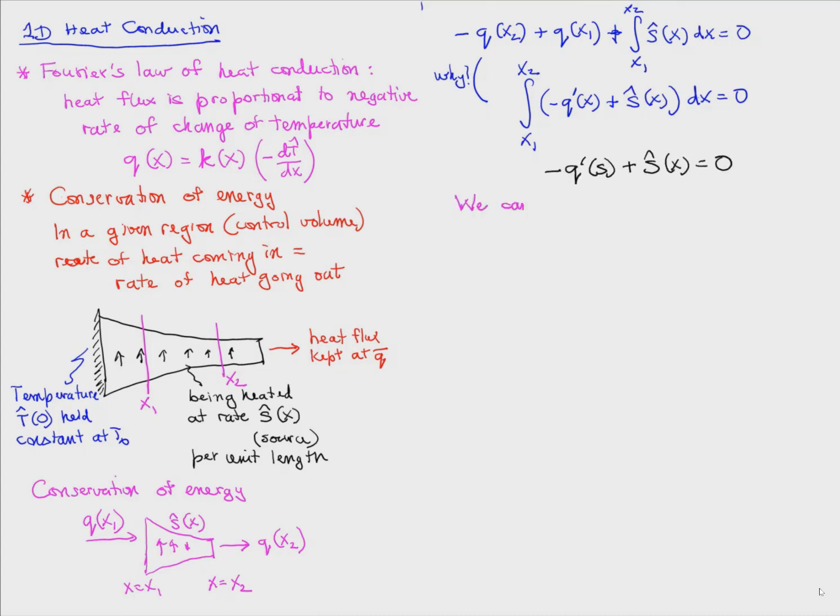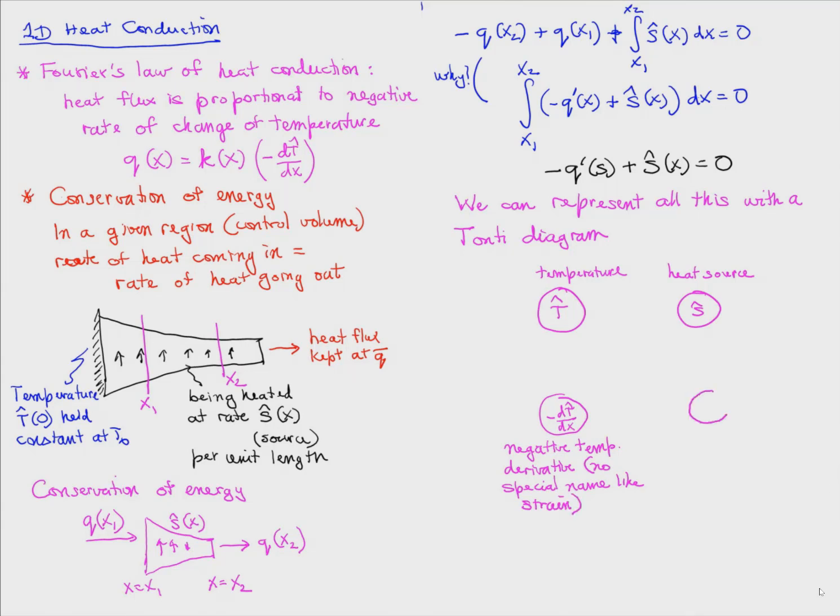This whole story can be represented in the form of a Tonti diagram. The temperature T̂ takes the place of displacement. The heat source takes the place of external force. The rate of change of temperature takes the place of strain, although this particular quantity doesn't have any special name.